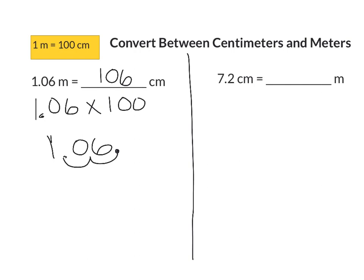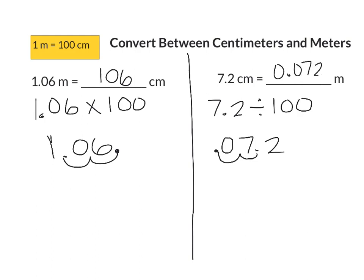We move our decimal point two places to the right, and that tells us that 1 and 6 hundredths meters is equal to 106 centimeters. Next we're going to look at going from centimeters to meters, which is the opposite. Instead of multiplying by 100, we're going to be dividing by 100. So we take 7 and 2 tenths centimeters and divide by 100, moving the decimal point two places to the left. We go one place, two places, put our decimal point, and fill that gap with a zero. So 7 and 2 tenths centimeters is equal to 72 thousandths meters.